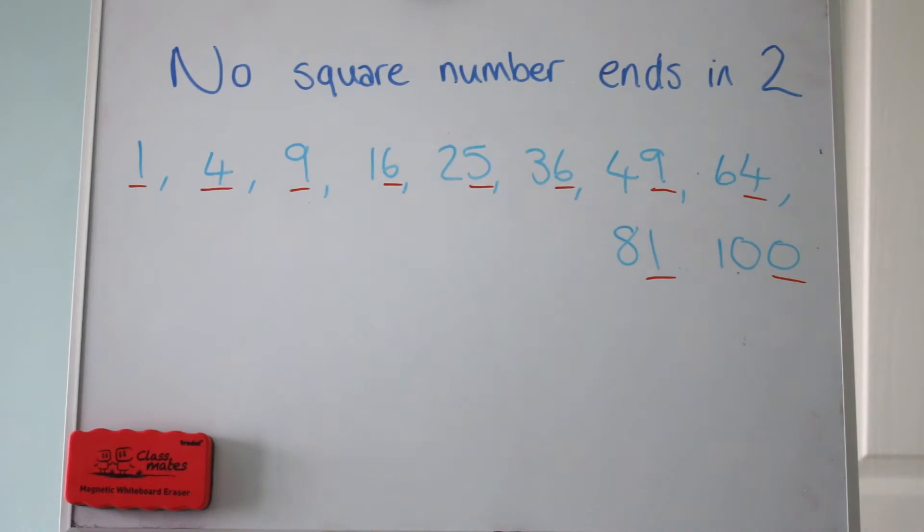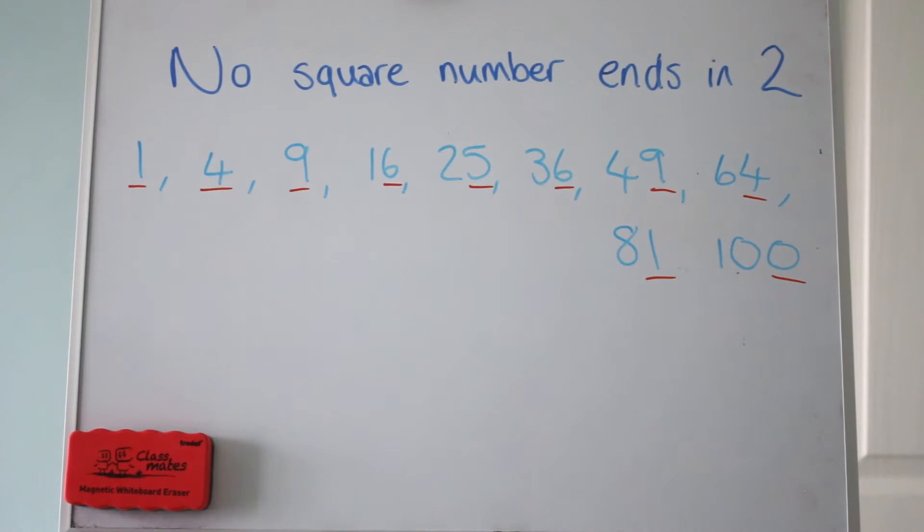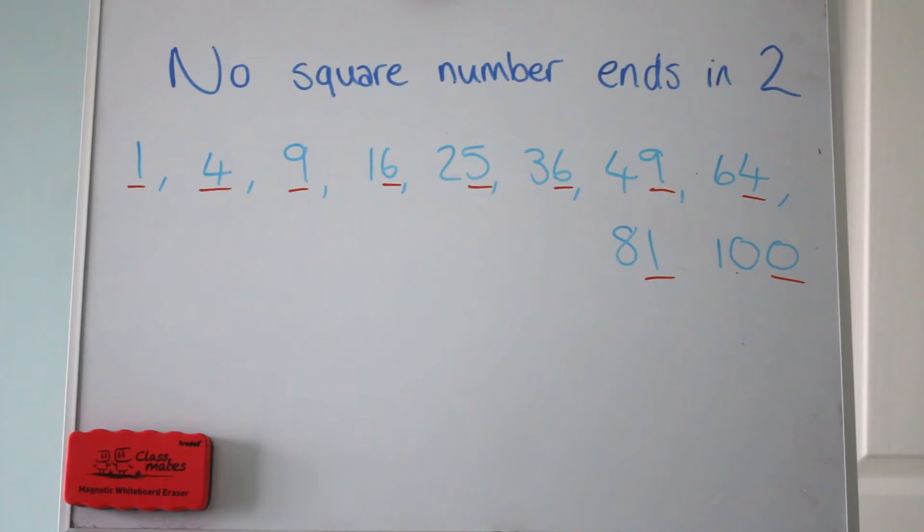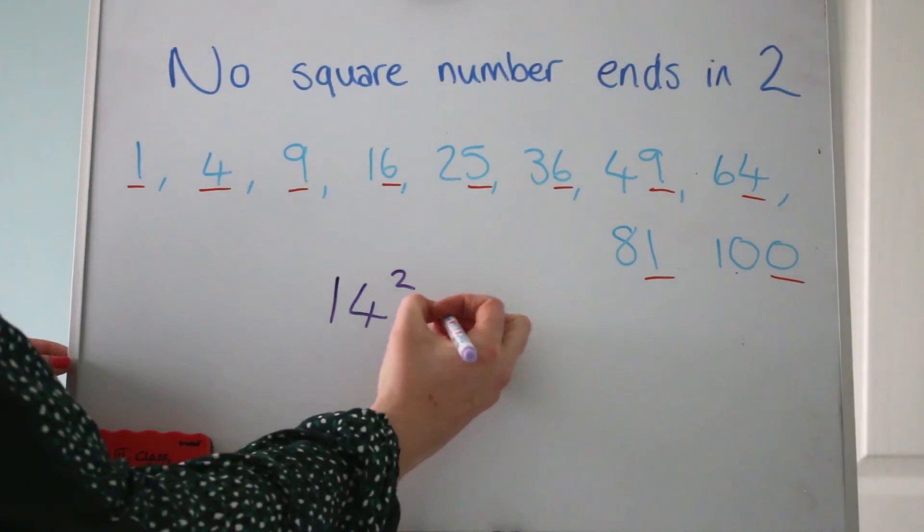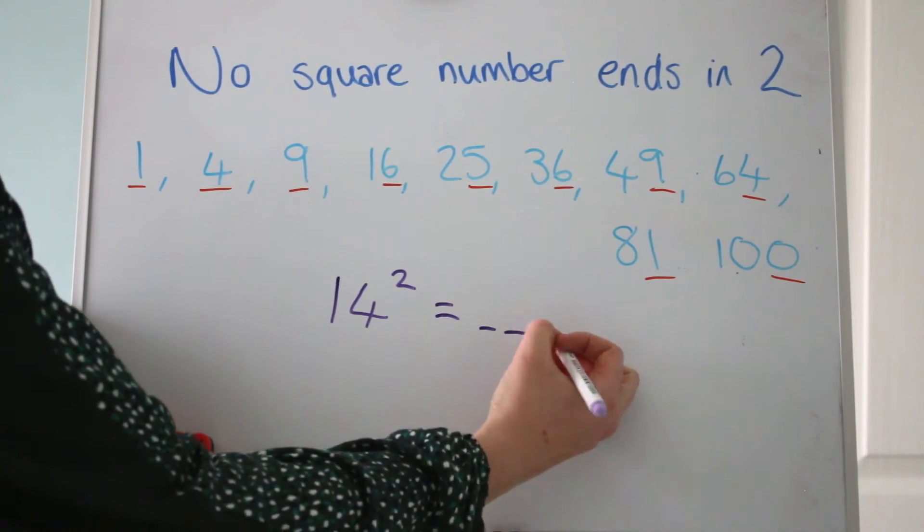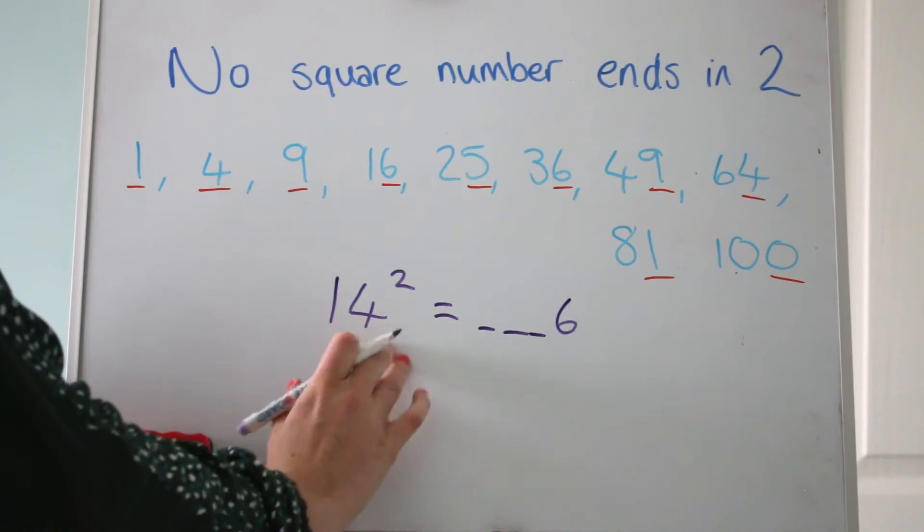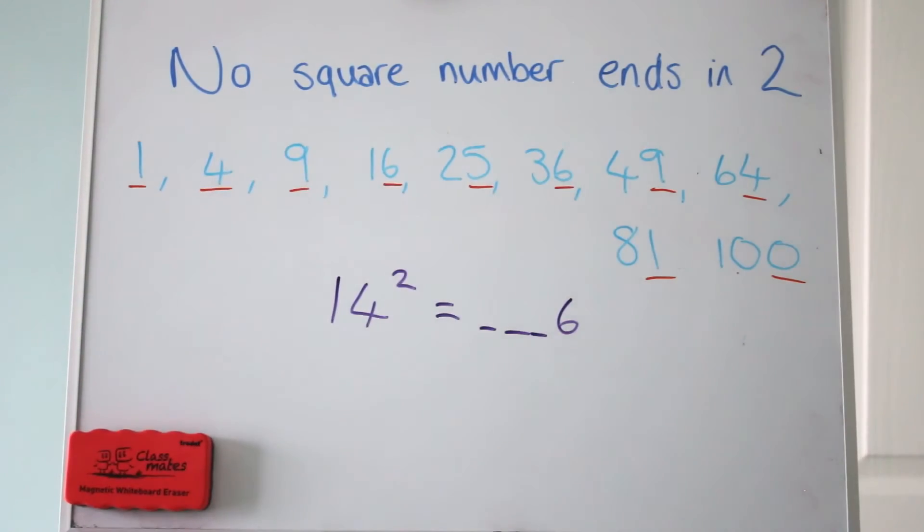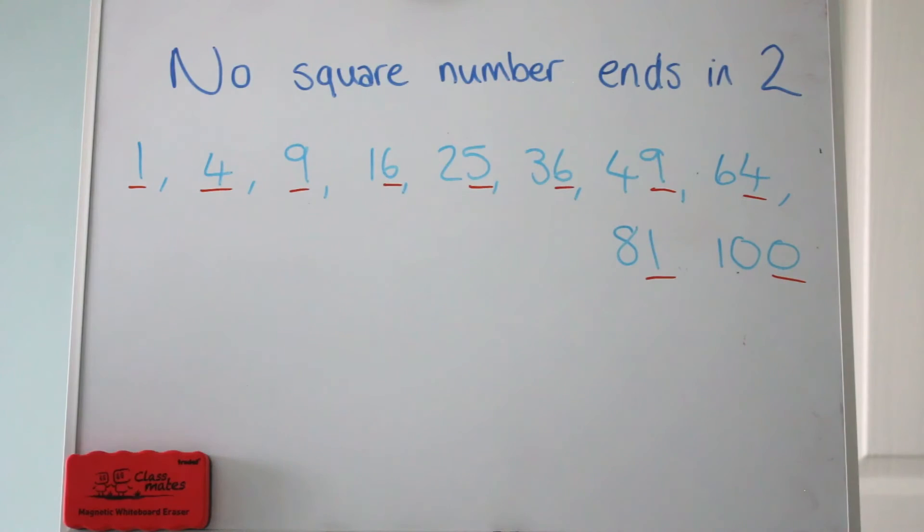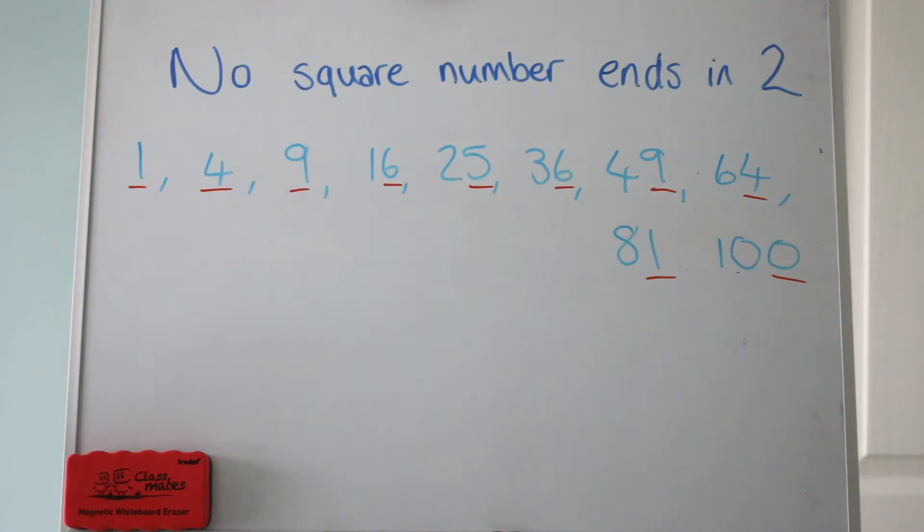I've listed the first 10 square numbers there and found all the numbers that they end in, and 2 isn't anywhere there. We can use this as proof by exhaustion because if you think about it, any bigger number when we square it will always end in these numbers too. If you were to take for example 14 and square it, it would be a bunch of numbers and at the end it would be 4 squared which is 16, so it would end in a 6. Whatever number you take to square it, it will end in the last digit squared. These are going to be the endings of all the numbers squared. Therefore no square number ends in 2.